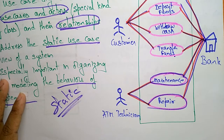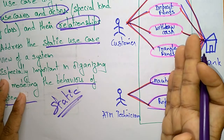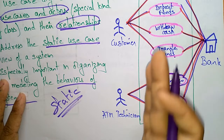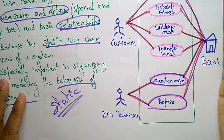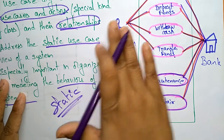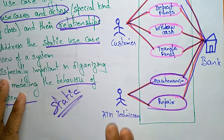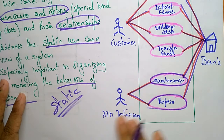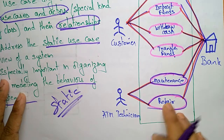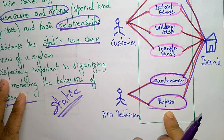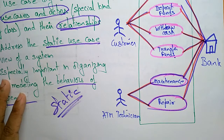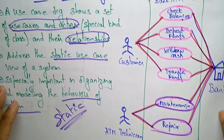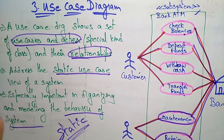The technician is maintaining the ATM center, and whenever a repair occurs, he sends a message to the bank. The customer performs actions like checking balance, depositing, and withdrawing, while the technician handles maintenance and repairs. The bank communicates with both the customer and the technician through relationships. This is about the use case diagram. Thank you.